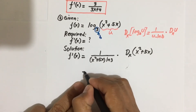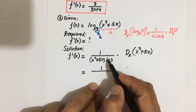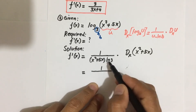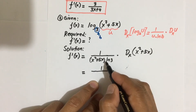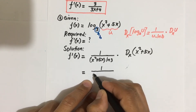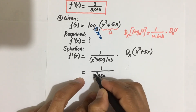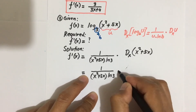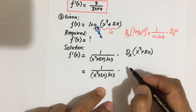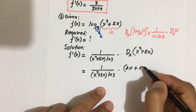We can rewrite this as 1 over (x squared plus 5x) multiplied by ln(3), then multiplied by the derivative of (x squared plus 5x). Applying the sum rule: the first term uses the power rule giving 2x, and the derivative of 5x equals 5. So the numerator becomes 2x plus 5.